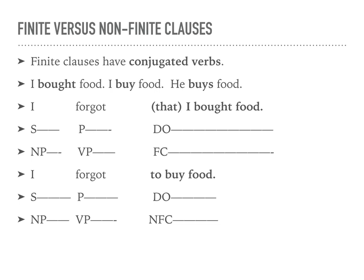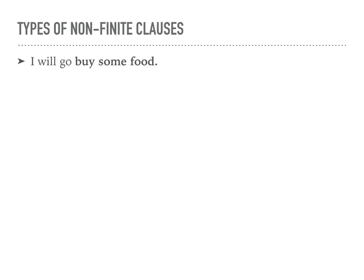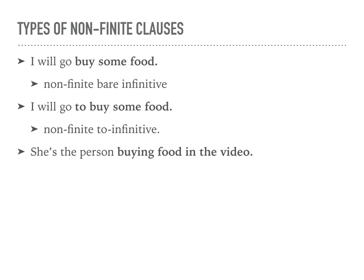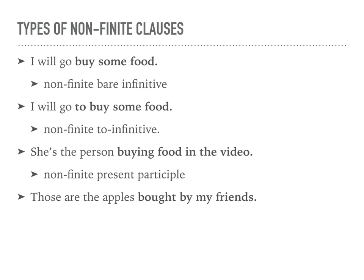The first type of non-finite clause is seen in 'I will go buy some food' — here 'buy some food' is what we would call a non-finite bare infinitive, because it doesn't use the word 'to' and the verb 'buy' is in its bare form. Then we have 'I will go to buy some food,' which is a non-finite to-infinitive. Then we have 'she's the person buying food in the video,' which we would call a non-finite present participle because it uses the -ing form. The last one is 'those are the apples bought by my friends,' which is a non-finite past participle because the verb 'buy' is in the past participle form.